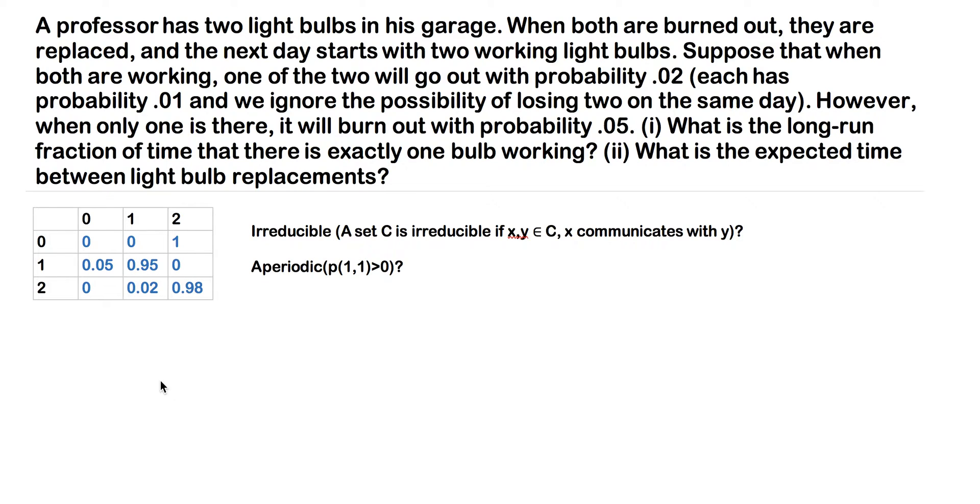However, when only one is there, it will burn out with probability 0.05. The first question is: what is the long-run fraction of time that there is exactly one working light bulb?